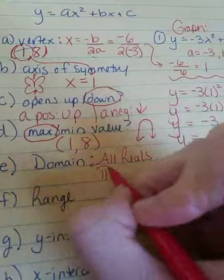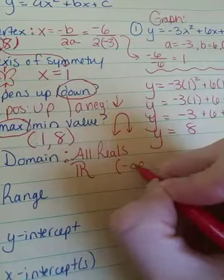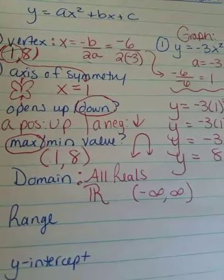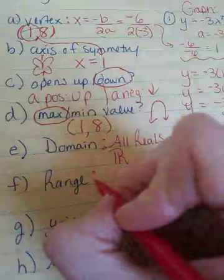So, you can write all reals. You can do the notation that we use, the double r. You can also use this new notation. That's called interval notation. That means negative infinity to infinity. So, any one of those three things you can write.